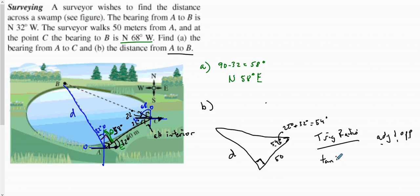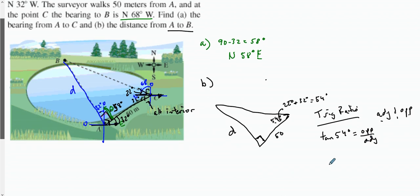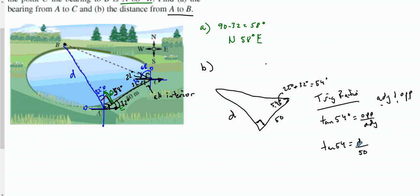Opposite over adjacent — that is tangent. So tangent of 54 degrees equals opposite over adjacent (TOA). Tangent of 54 equals d over 50. We multiply both sides by 50, so 50 times tangent of 54 degrees equals d.